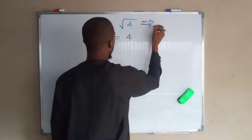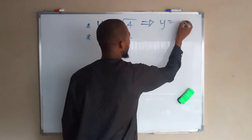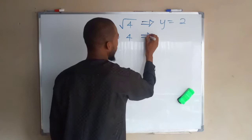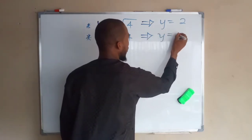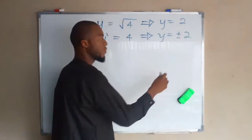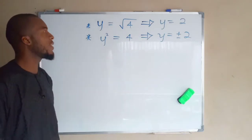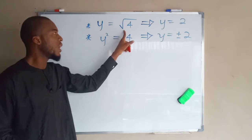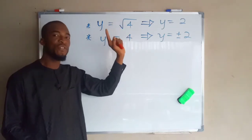The first one implies that y equals positive two, while the second one y equals plus or minus two. I'll prove the two for you right now. Remember, in laws of indices, a square root has an index of two.